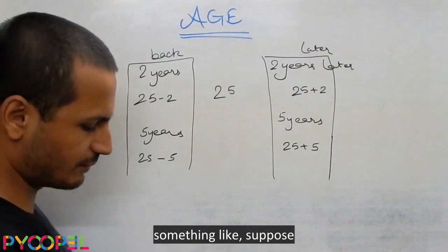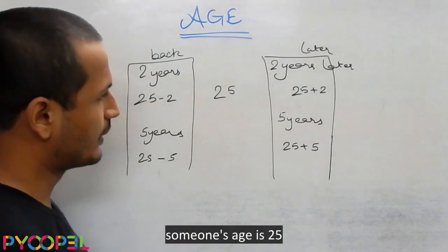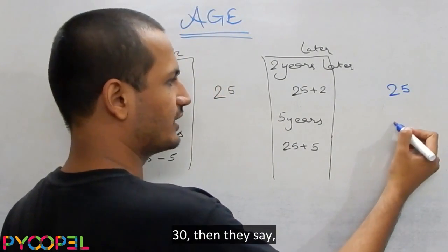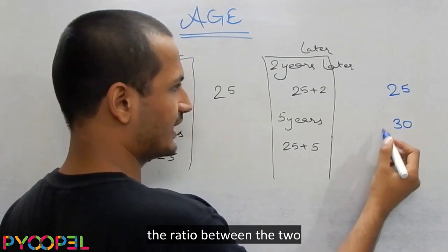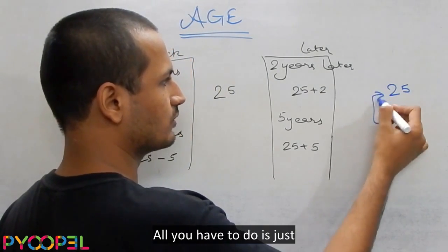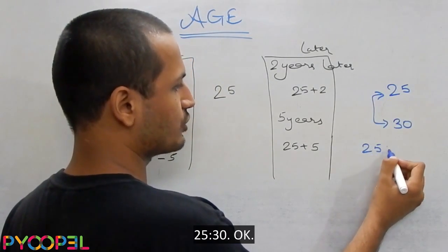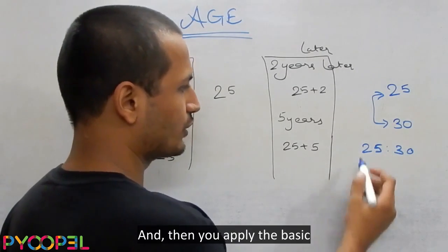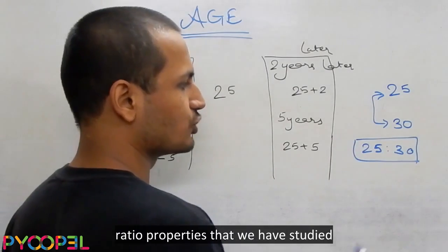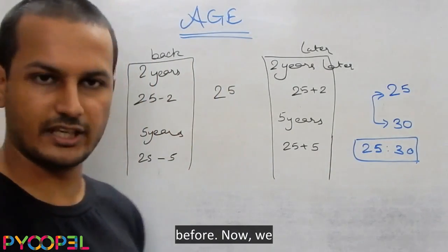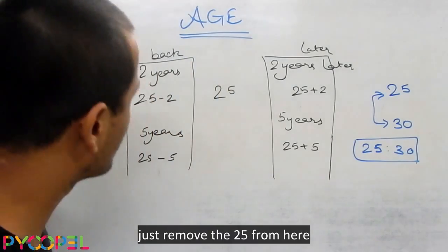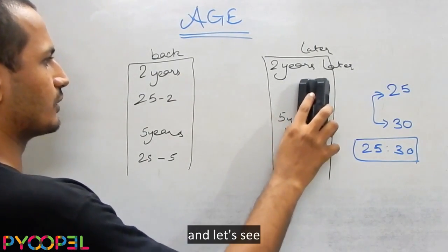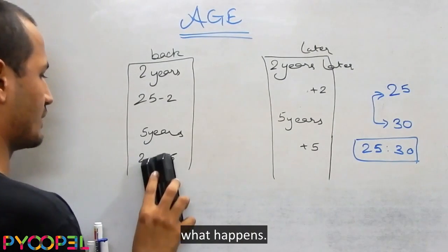Comparison between different ages: suppose someone's age is 25, the other person's age is 30, then the ratio between the two is just 25 is to 30. That is all you have, and then you apply the basic ratio properties that we have studied before.